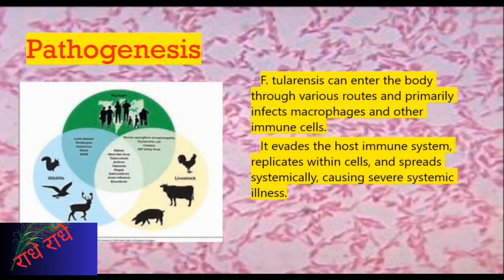F. tularensis is a highly infectious disease that can enter the body through various routes. Once inside, it primarily infects immune cells, such as macrophages, to enable its replication and systemic spread, leading to severe systemic illness.